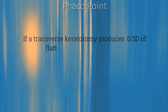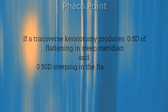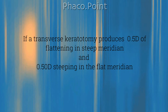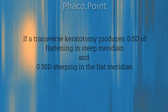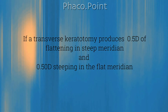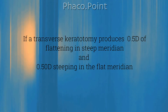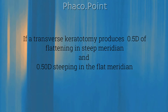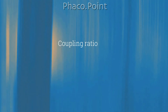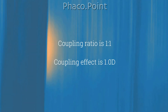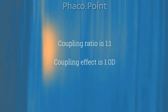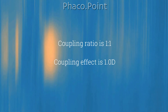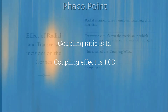If a transverse keratotomy produced 0.5 diopters of flattening in the steep meridian and 0.5 diopters of steepening in the flat meridian, then the coupling ratio in this case would be 1:1 and the total coupling effect is 1 diopter.